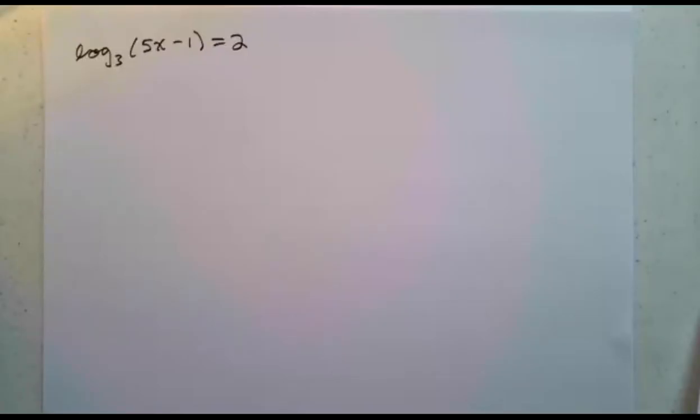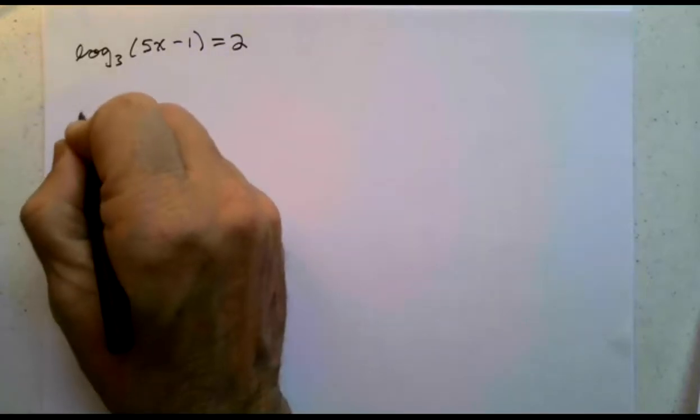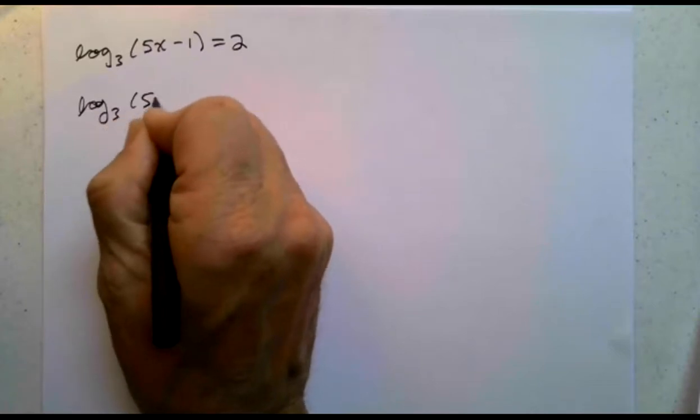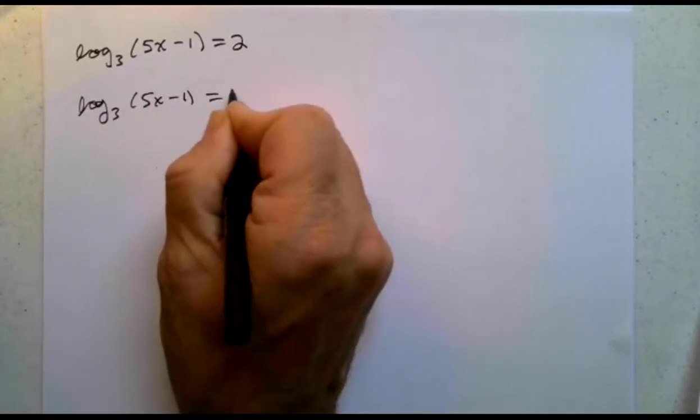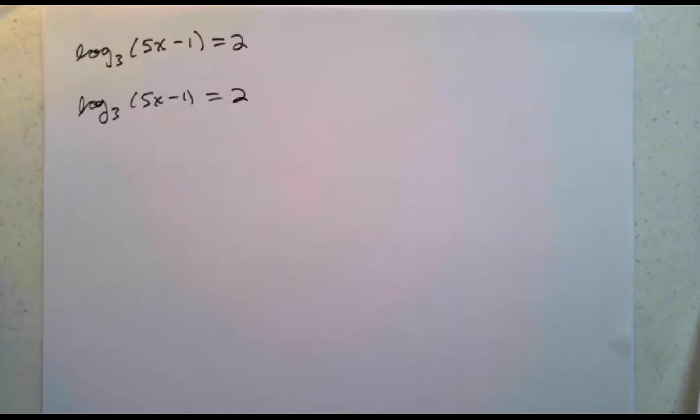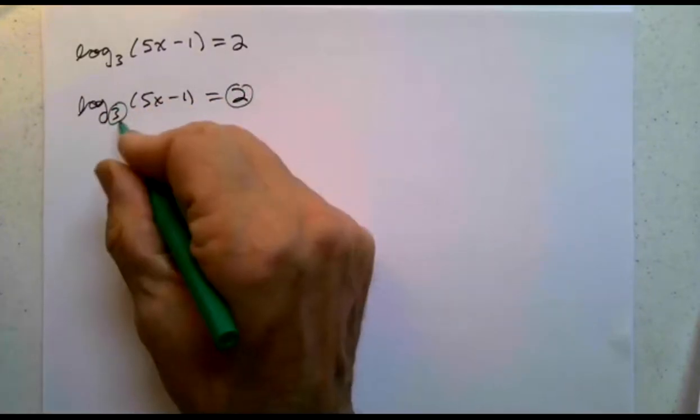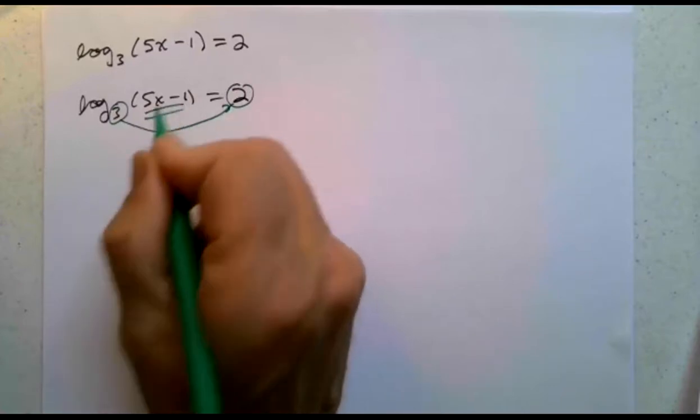So this question asks us to solve log base 3 of 5x minus 1 equals 2. Let's think about this. We have a base and we have an exponent. The base is 3, the exponent is 2, so 3 to the second equals 5x minus 1.